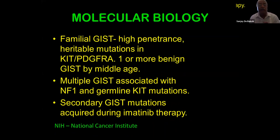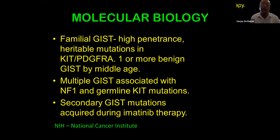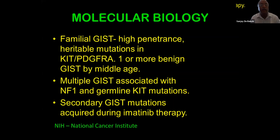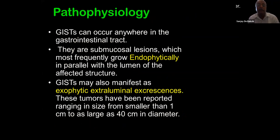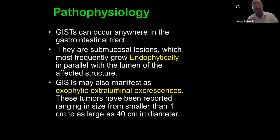Familial GIST involves high-penetrance heritable mutations in KIT and PDGFRA, with one or more benign GISTs occurring by middle age. We normally say GISTs never metastasize to lymph nodes, but in NF1-associated cases, if they do metastasize to lymph nodes that is a very bad prognostic sign. GISTs can occur anywhere in the GI tract as submucosal lesions, most frequently growing endophytically inside the lumen, but may also manifest as exophytic extraluminal excrescences. Tumors range in size from 1 cm to 40 cm.